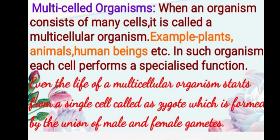Higher organisms, also called multi-cellular organisms, are made up of many cells — examples include plants, animals, and human beings. In these organisms each cell performs a specialized function. Remember, even the life of a multi-cellular organism starts from a single cell called the zygote, which is formed by the union of male and female gametes. Cell division then takes place and ultimately the multi-cellular organism is formed.